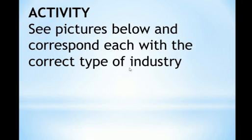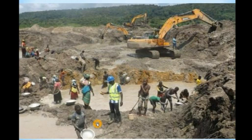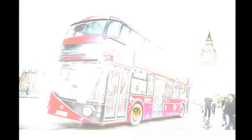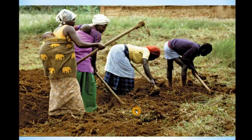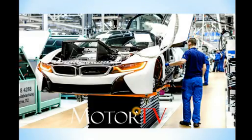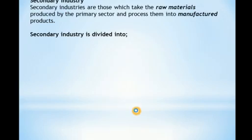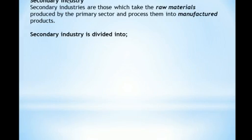There's an activity here where you'll look at a series of pictures and match them to the right type of industry. You will pause the video, look at the eight pictures shown, and identify which type of industry each picture belongs to. As mentioned, this topic will concentrate mainly on secondary industries, so let's take a closer look at the different parts of secondary industries.